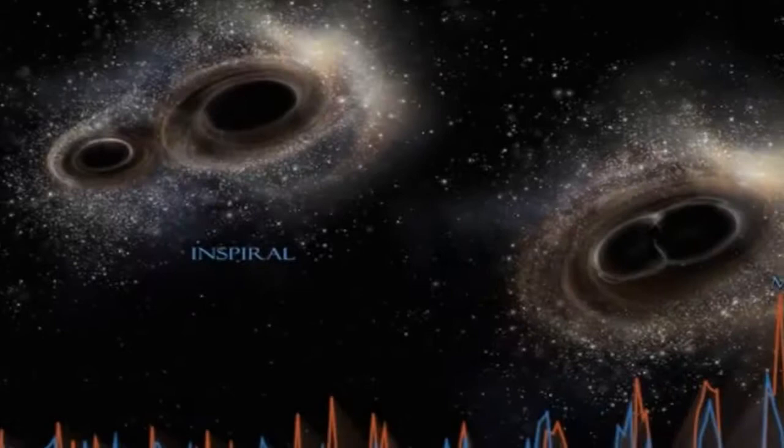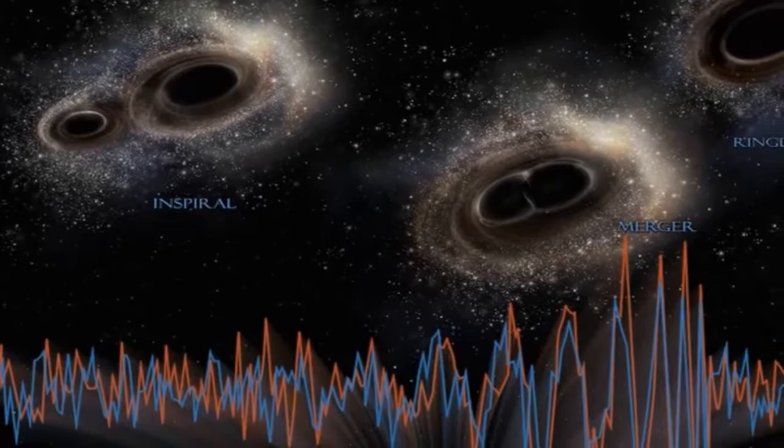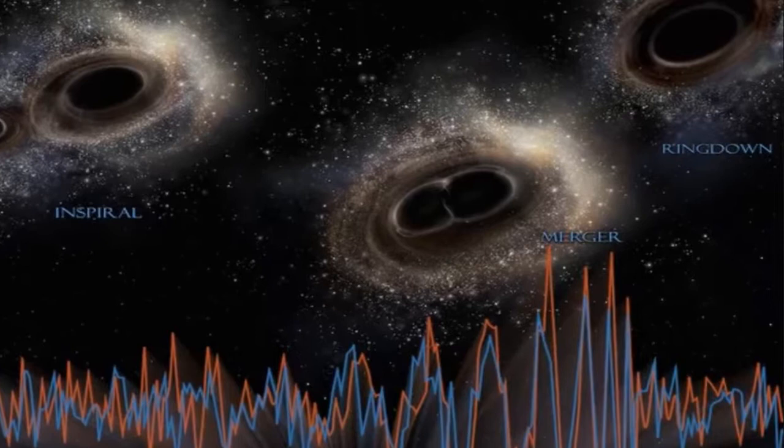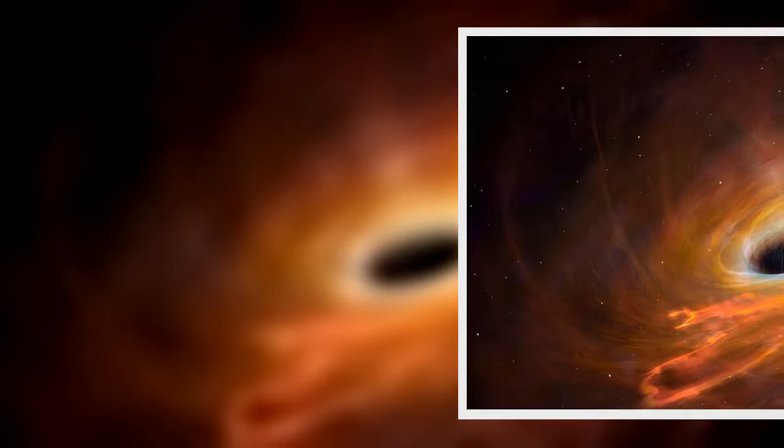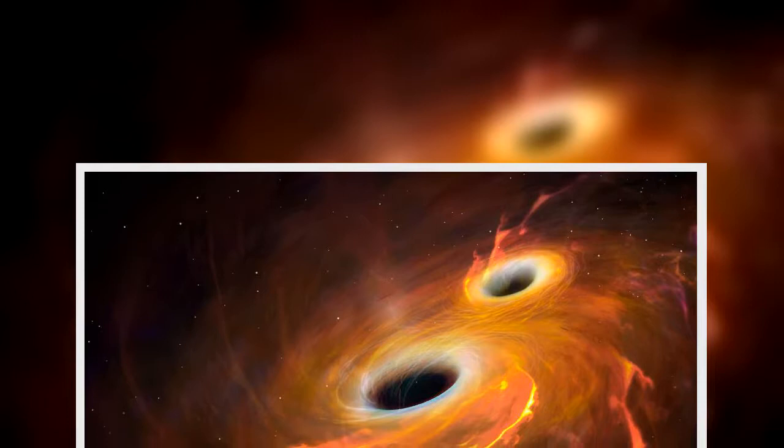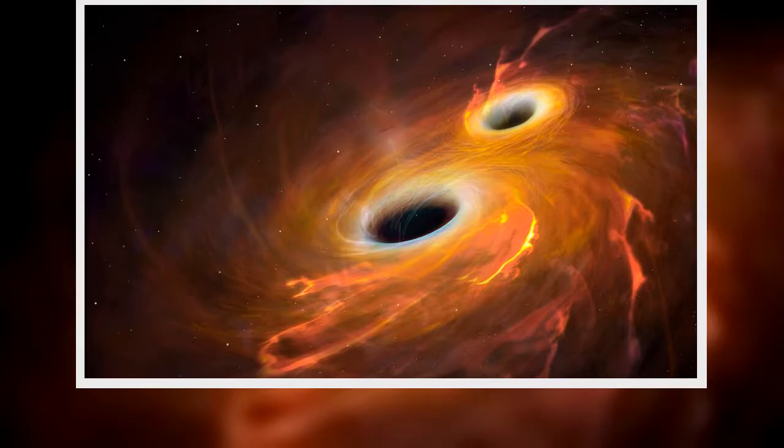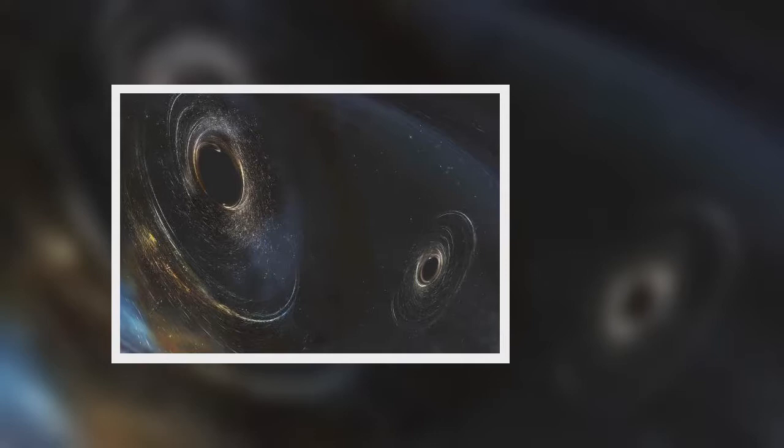To understand what the image shows, it's helpful to understand how the LIGO works. The detector splits a laser beam into two beams that travel down separate 2.5-mile-long passageways before bouncing off mirrors and intersecting at a light detector. Without any other disturbances, the two beams should arrive at that light detector at the same time. But the September 14 gravitational waves created brief fluctuations in the length of those passageways, which changed when the two beams of light arrived at the beam splitter.